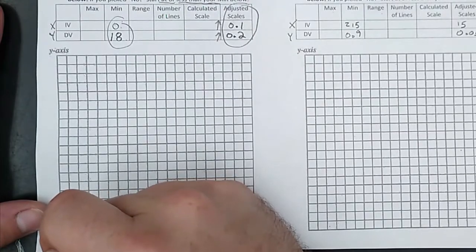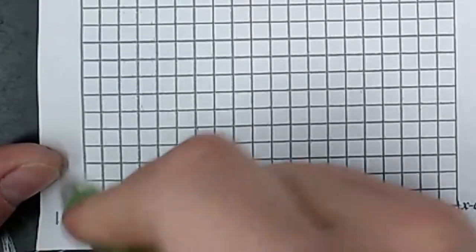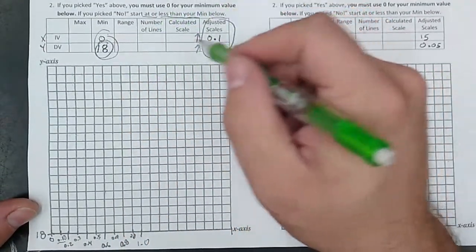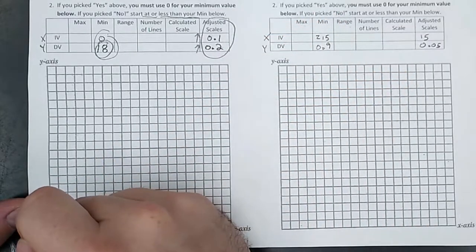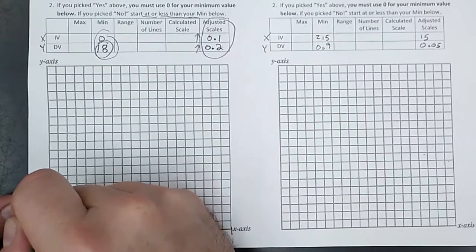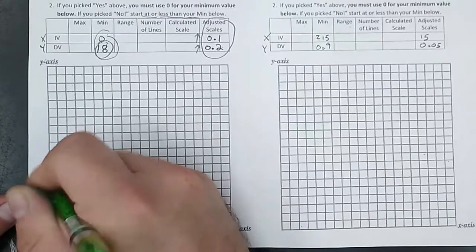18. So this very bottom corner there is going to be 18. Not 0 this time, but 18. Why 18? Because that right there minimum is 18. We're counting by 0.2. So that one will be 18.2, 18.4, 18.6, and so on and so forth.